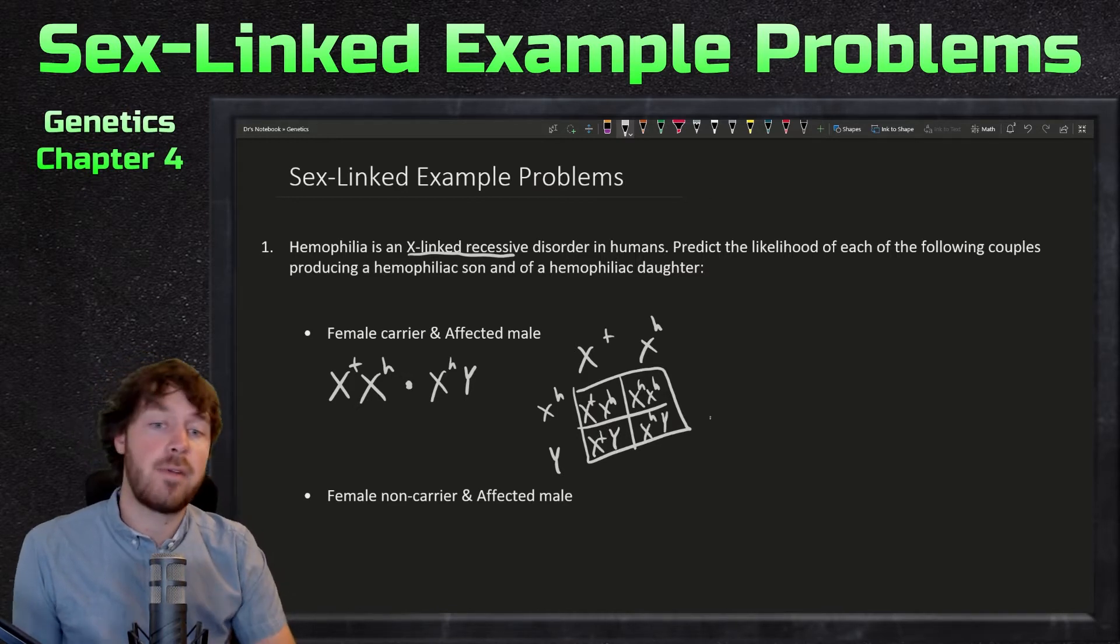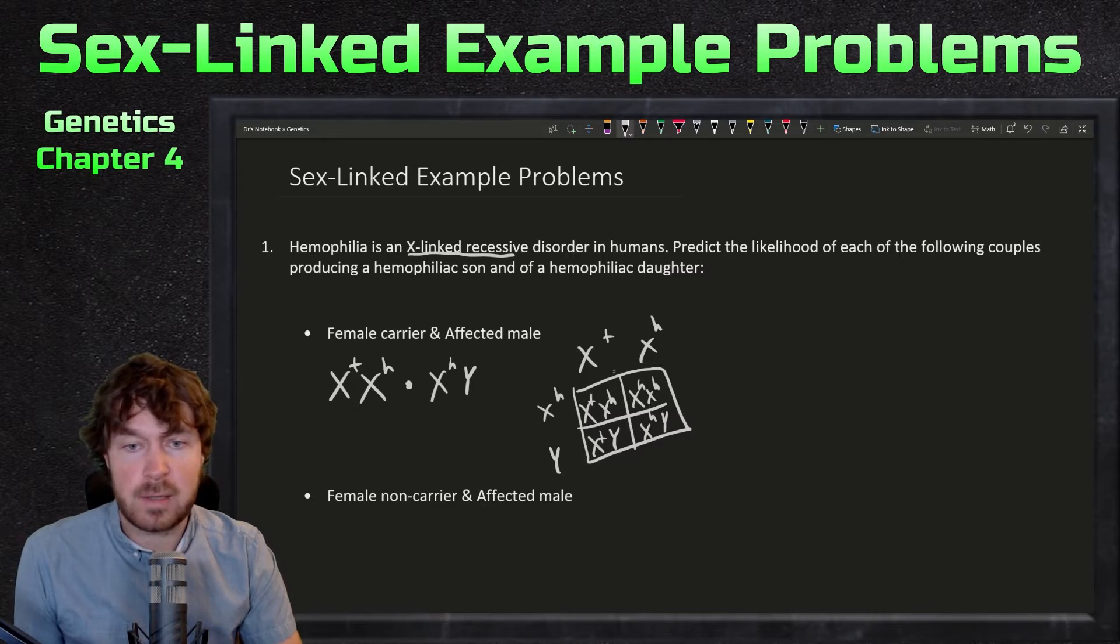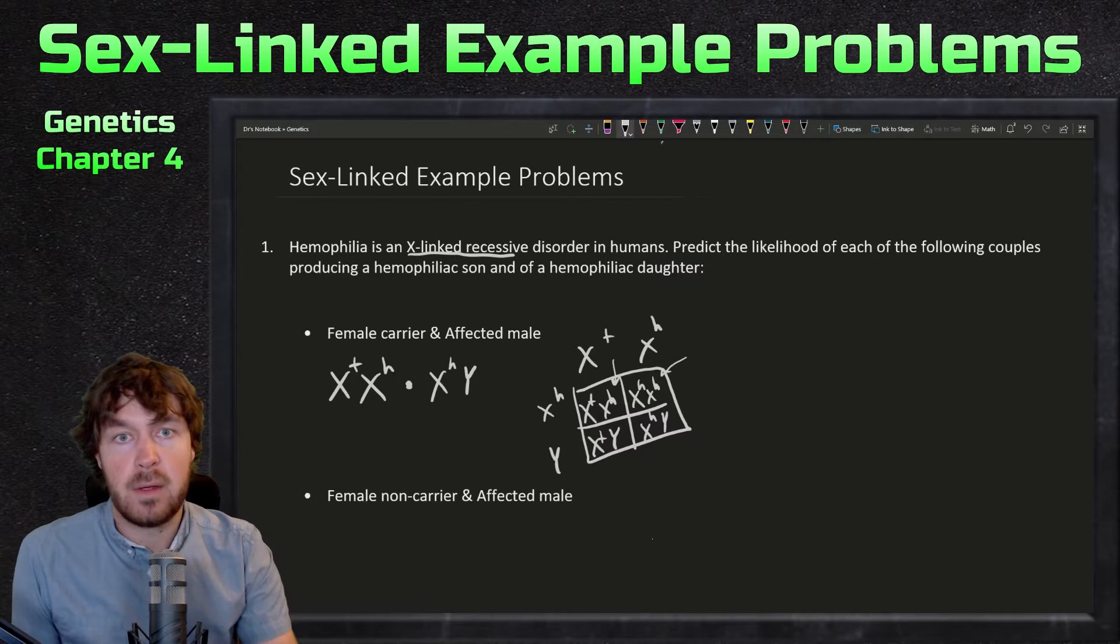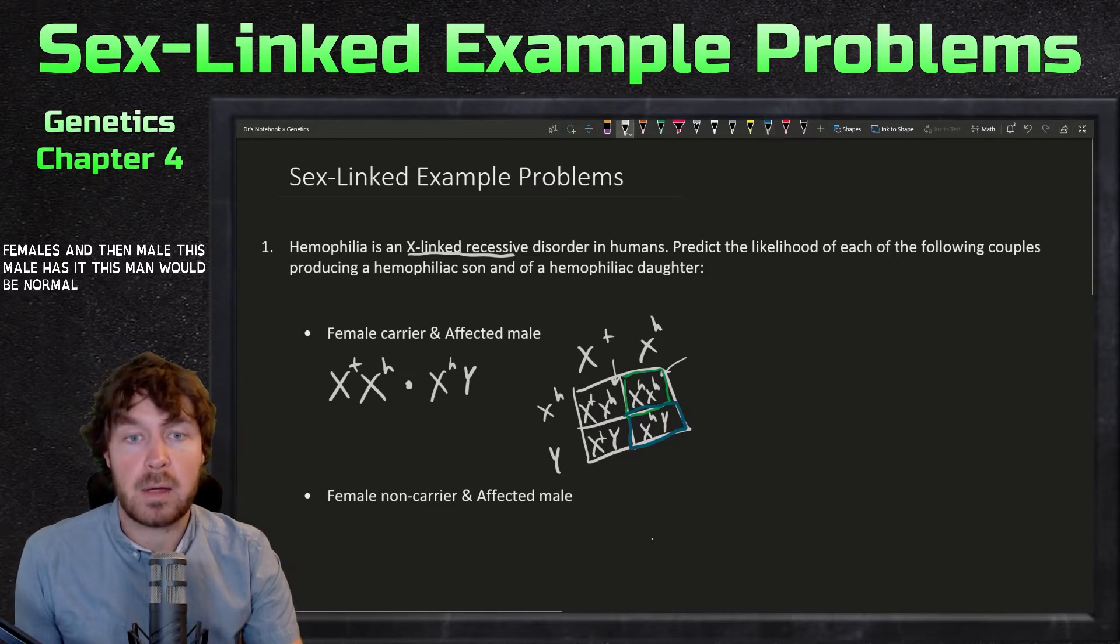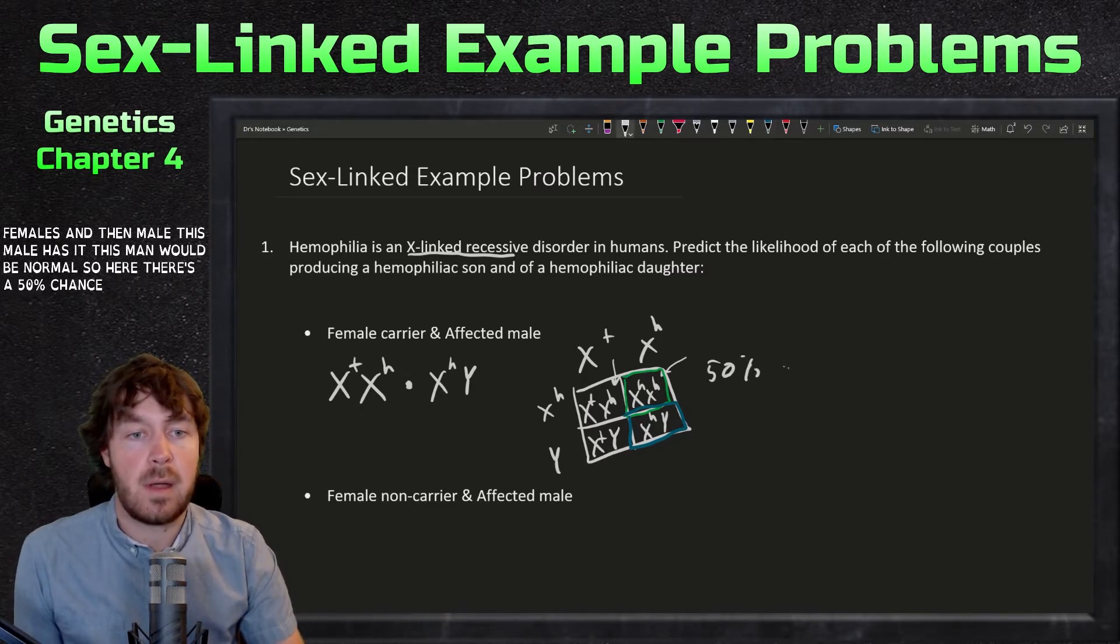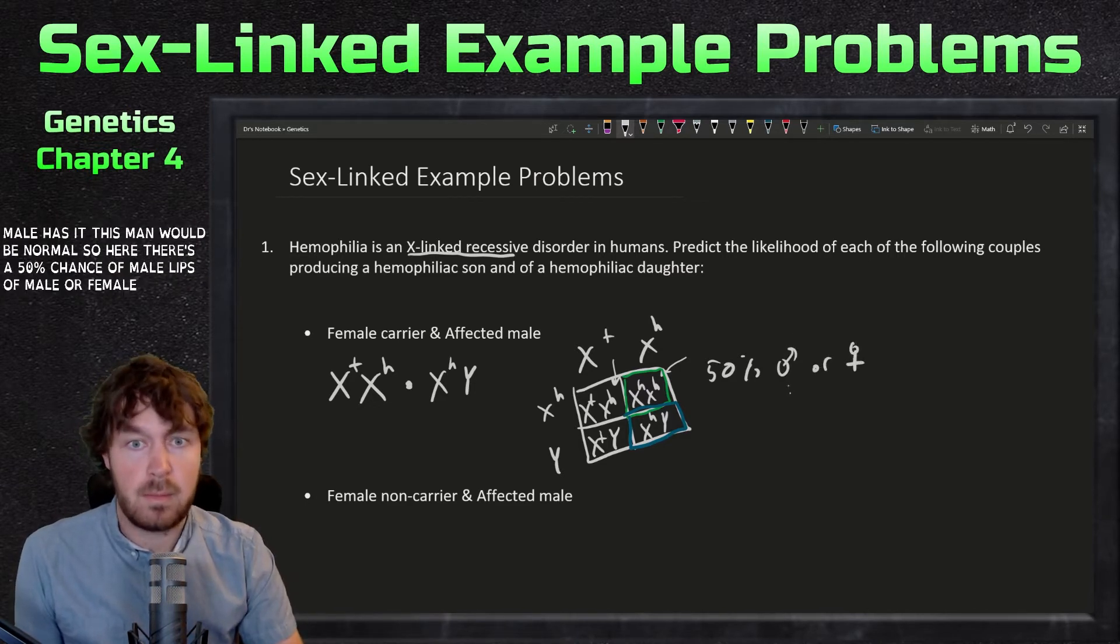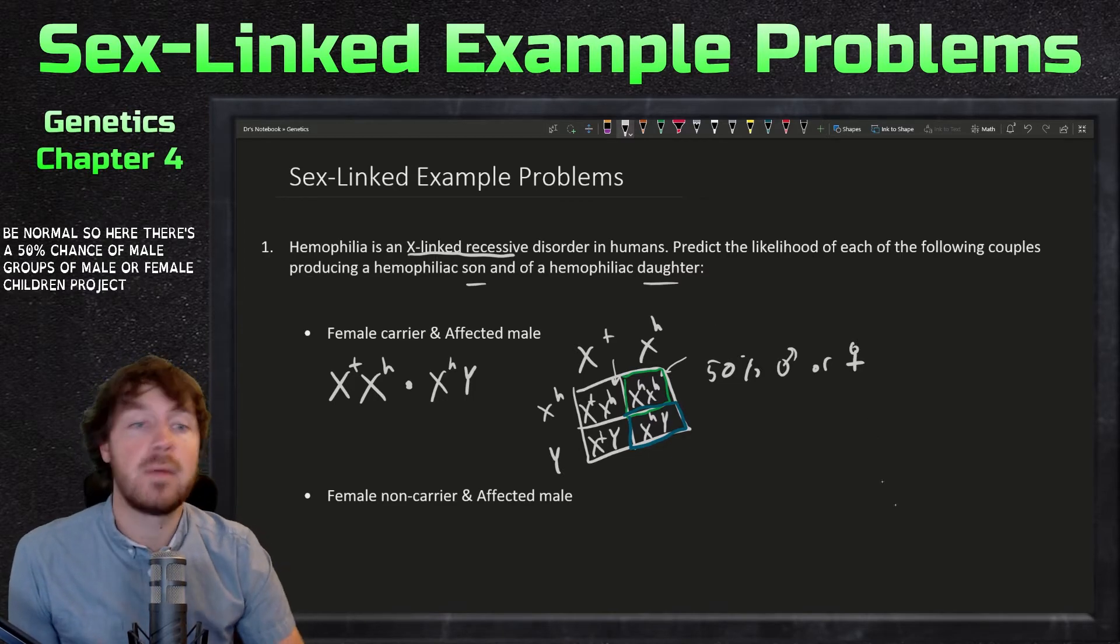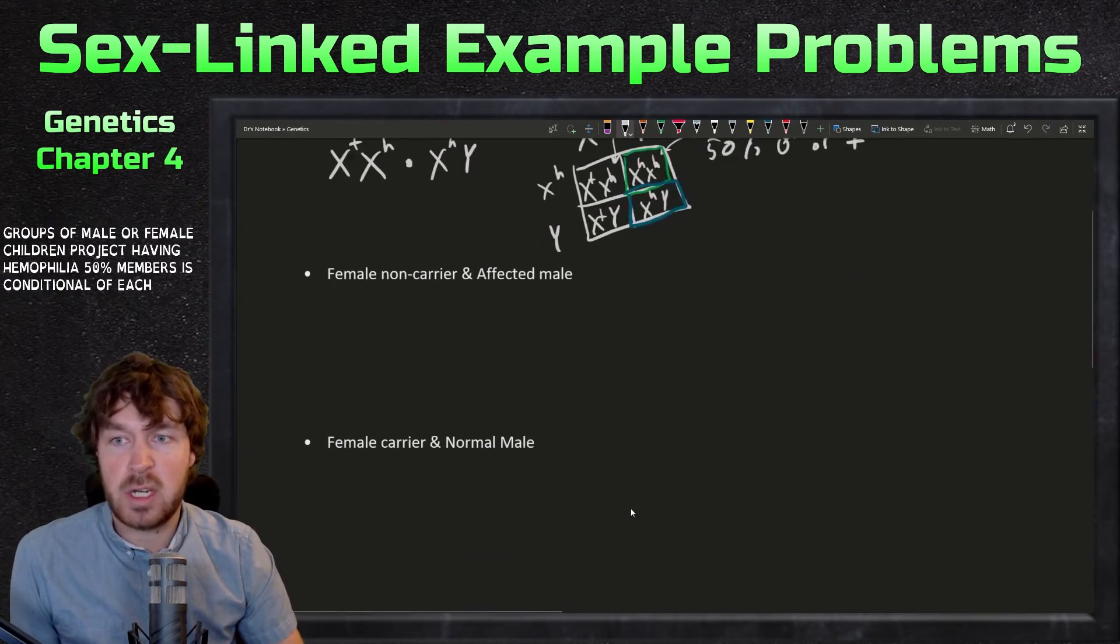Here is our final Punnett square. Now we need to analyze results. Remember, females are XX, males are XY. We look at the females: this female will be a carrier, this female will have it. Out of the two females, and then males: this male has it, this male would be normal. There's a 50% chance of male or female children progeny having hemophilia. Remember, this is conditional of each.